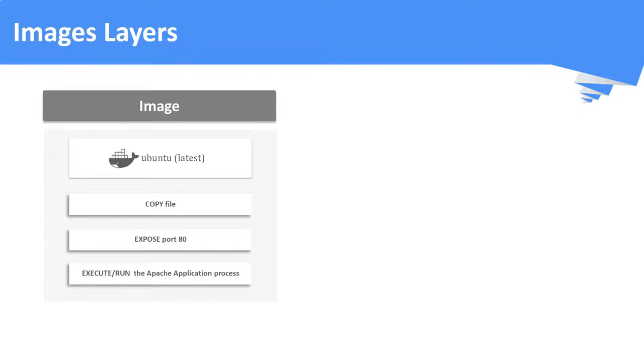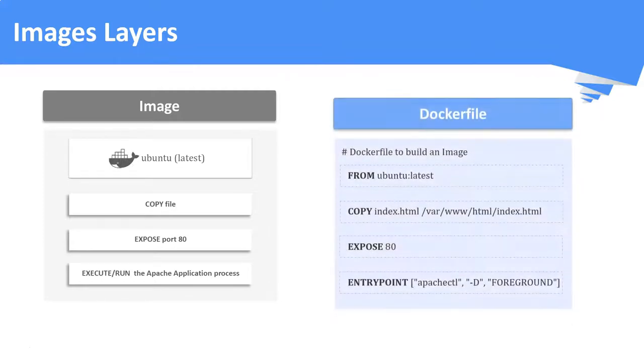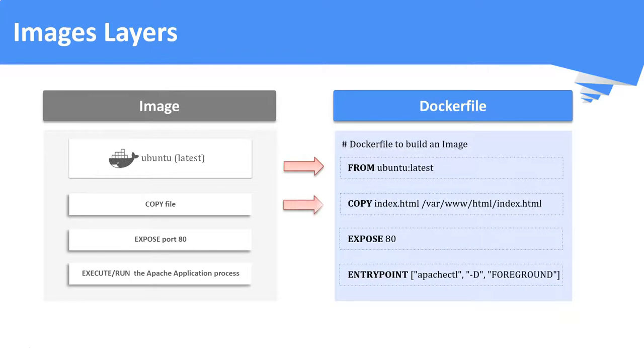What constitutes a Docker image? A Docker image consists of several image layers. Each layer corresponds to a set of instructions in your Dockerfile. If you look at a Dockerfile closely, each of these instructions will build a layer in the Docker image when it is built.